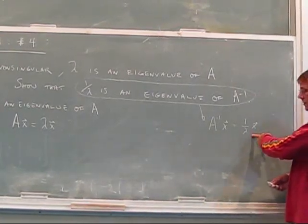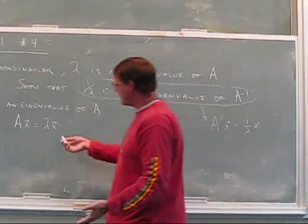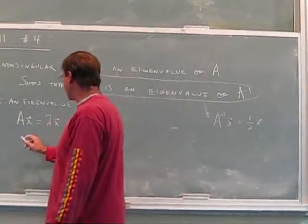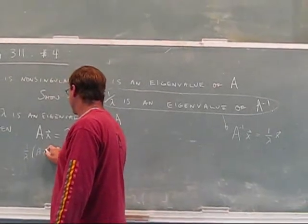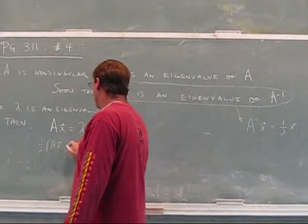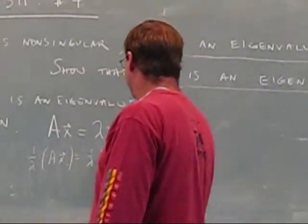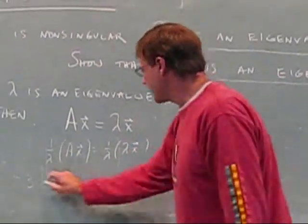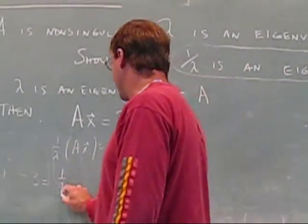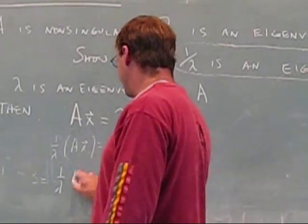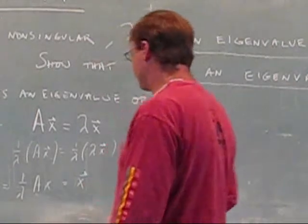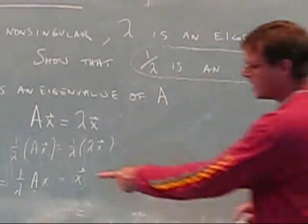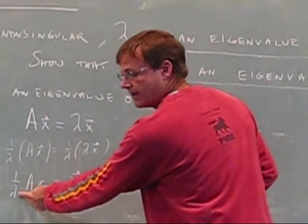We want 1 over lambda involved also, so let's just do one thing at a time. Let's divide both sides by lambda. OK, this gives 1 over lambda A x equals x. Now this is just a constant here.